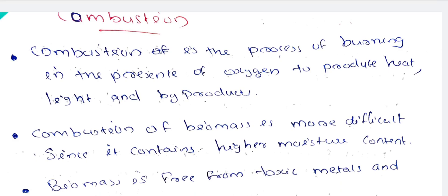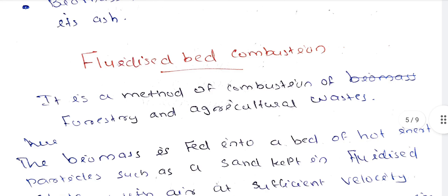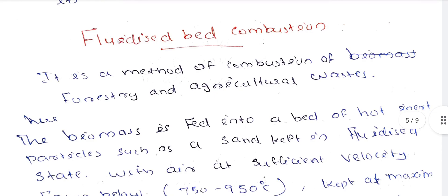Combustion is the process of burning in the presence of oxygen to produce heat and light and byproducts. Combustion of biomass is more difficult since it contains higher moisture. Biomass is free from toxic metals in its ash. The method used is fluidized bed combustion. This densification is also important for fluidized bed combustion.